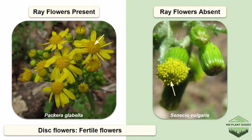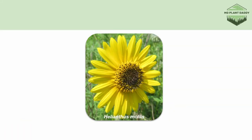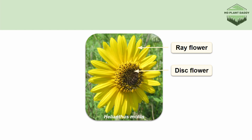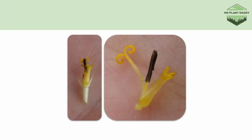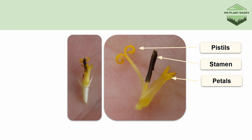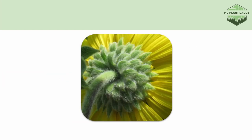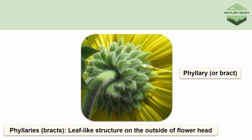Common groundsel has no ray flowers and is in full bloom, whereas butterweed has ray flowers and is also in bloom. The ashy sunflower produces 15 to 30 ray flowers and at the same time forms many disc flowers that make up the center of the flower head. Each disc flower of an ashy sunflower has five petals, five brown stamens, two fused pistils, and two sepals. If we look at the underside of an ashy sunflower we'll notice small leaf-like structures called phyllaries or bracts, which have a similar function to sepals but are on the outside of the flower head. The phyllaries of an ashy sunflower are short, curly, and pubescent.